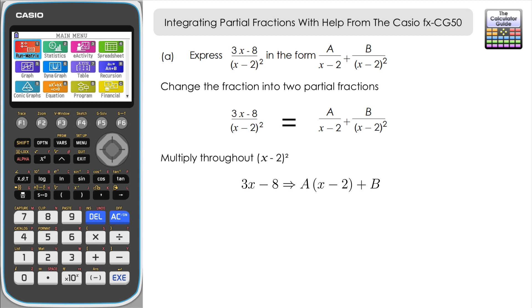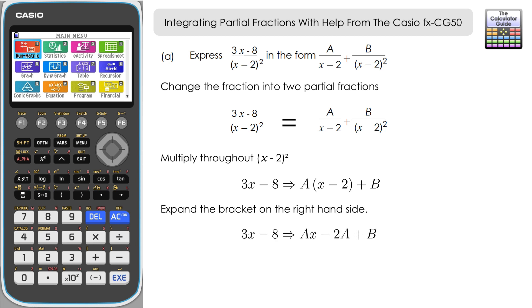Expanding the right-hand side, we can rewrite this as 3x − 8 = Ax − 2A + B. Comparing the x terms on both sides, we have 3x on the left and Ax on the right, so A must equal 3. Comparing equivalent coefficients confirms that A = 3.